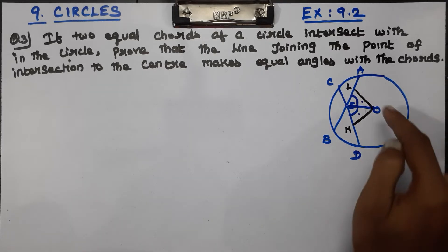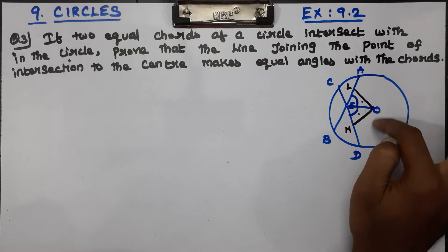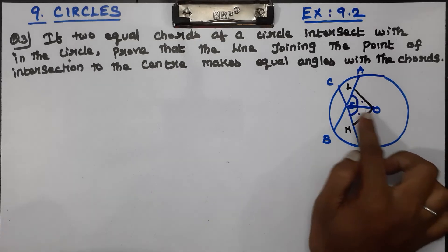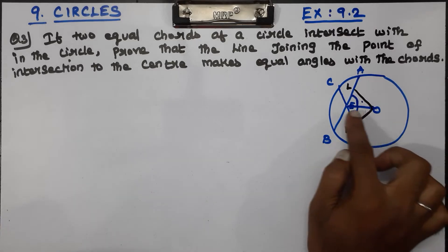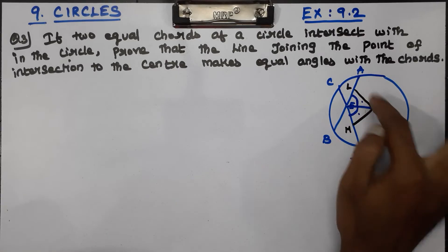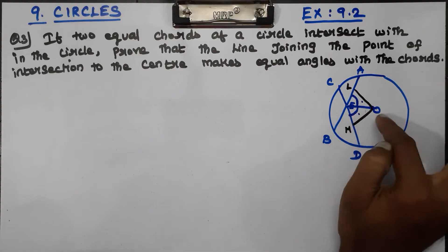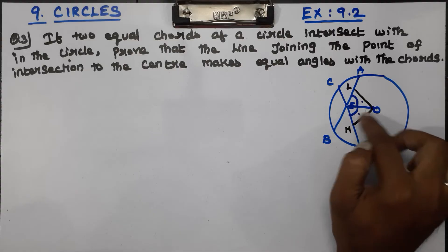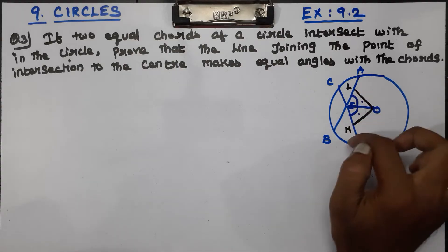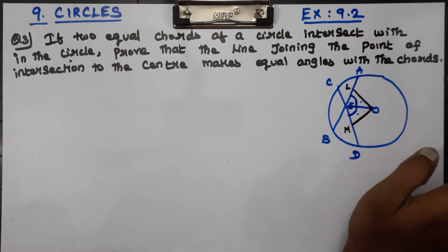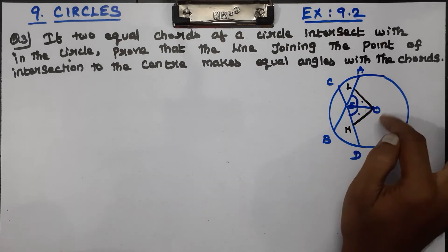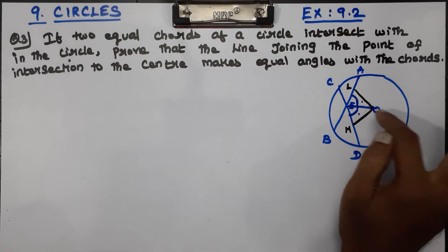If the two triangles are considered, O, E, O is a common length. These two angles are common. The two sides are common, and this side is equal. Therefore these two angles are equal.